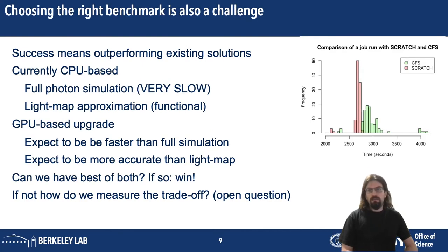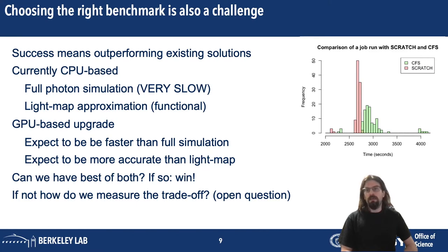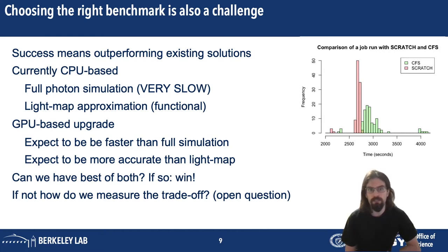Another challenge exists in implementing the correct benchmark. The measure for success is to outperform the existing solution, but the existing solution is in fact two existing solutions. The first is a full simulation of all of the photons on the CPU — memory intensive and slow, and not frequently used. More frequently, simulations use a light map, which is an approximation of the system; it's functional but has limits to its accuracy. Our GPU-based upgrade can reasonably be expected to be faster than the full simulation and more accurate than the light map. We want it to outperform the full simulation for accuracy and the light map for speed.